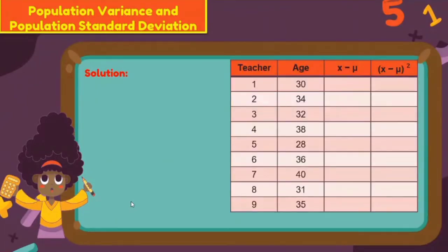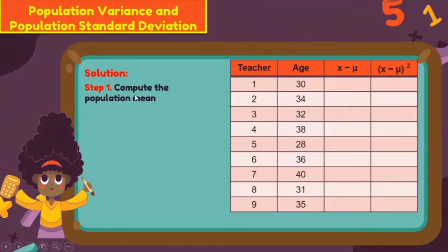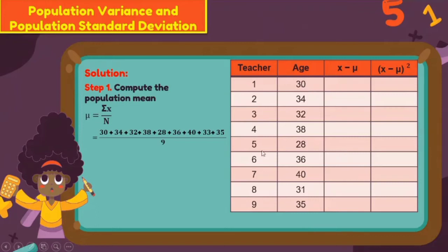We construct a table with teacher numbers 1 through 9 and their ages: 30, 34, 32, 38, 28, 36, 40, 31, and 35. Step 1: compute the population mean using μ = Σx / N. Adding the ages gives Σx = 304, and dividing by N = 9 gives μ ≈ 33.78.